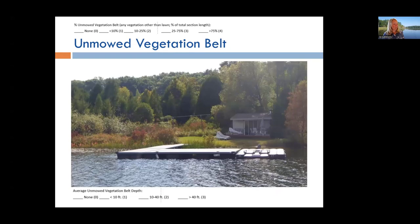In one example, you might see lawn going right to the water in some spots, then a very narrow vegetation belt, then a deeper one, continuing into the forest — a little bit of everything. You're scoring the whole thousand-foot section.